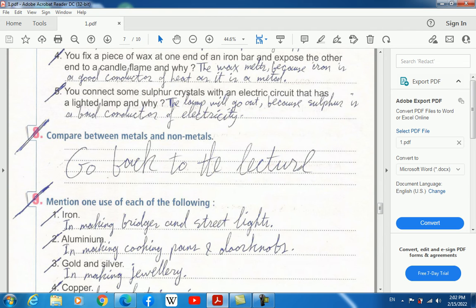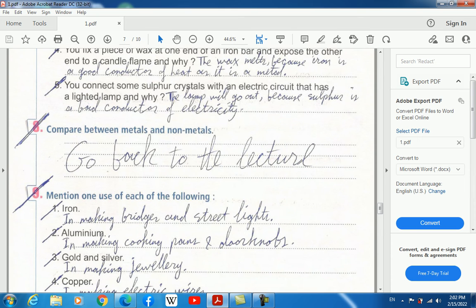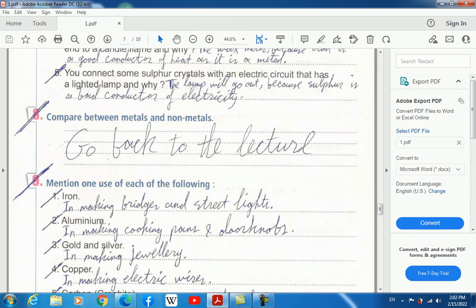You fix a piece of wax at one end of an iron bar and expose the other end to a candle flame. What will happen? The wax melts, and this is because iron is a good conductor of heat as it's a metal. So it transfers heat, and in consequence the wax melts.